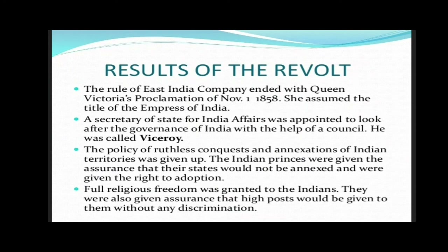Results of the revolt: The rule of the East India Company ended with Queen Victoria's proclamation of November 1, 1858, and she assumed the title of Empress of India. A Secretary of State for Indian Affairs was appointed to look after the governance of India with the help of a council. The head of the Indian government was called the Viceroy. The policy of ruthless conquest and annexation was given up. Indian princes were given assurance that their states would not be annexed and were given the right to adoption. Full religious freedom was granted, and Indians were assured that high posts would be given without discrimination.